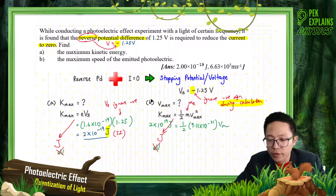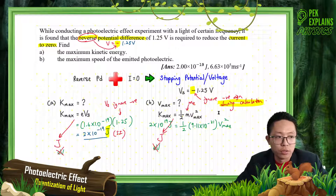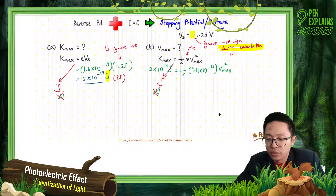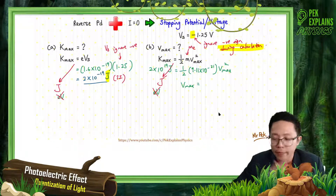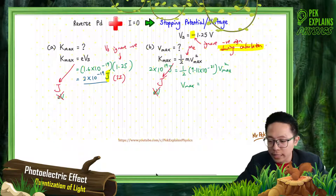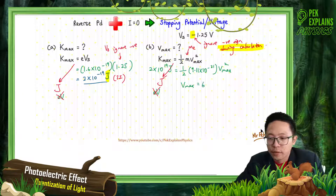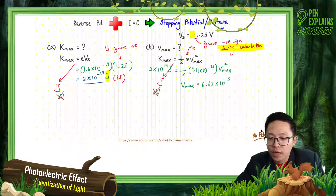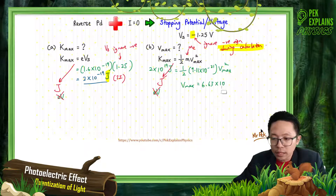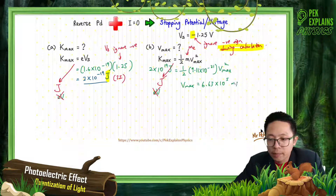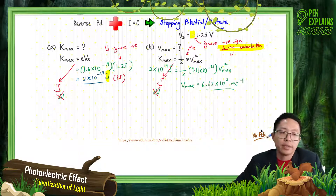We can find Vmax. Cross multiply, and finally our Vmax — we get the answer: Vmax is 6.63×10⁵ meters per second. That's the final maximum velocity.